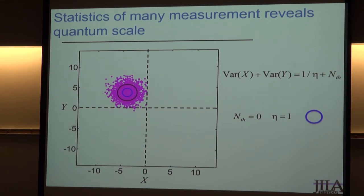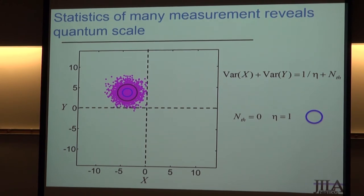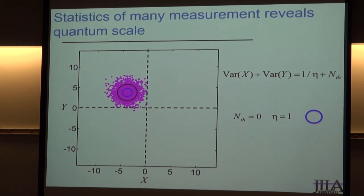One way to represent the quantum scale is: if there were absolutely no noise in the measurement system or memory, two-thirds of data points would fall inside the small blue circle. In fact, two-thirds fall inside the somewhat larger black circle, essentially because of the inefficiency of our measurement system — about 50% efficient. The extra noise is not primarily due to the thermal excitation of the mechanical oscillator; it's predominantly the measurement system inefficiency.